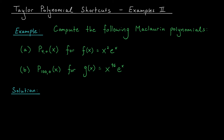Here we're looking for two Maclaurin polynomials. First, the fourth degree Maclaurin polynomial for the function x squared e to the x, and second, the one hundredth degree Maclaurin polynomial for the function x to the ninety-six e to the x. Part b looks a little scary so I'm going to start with part a.